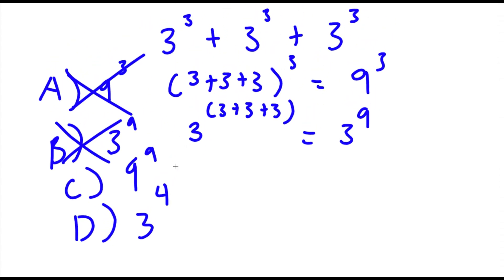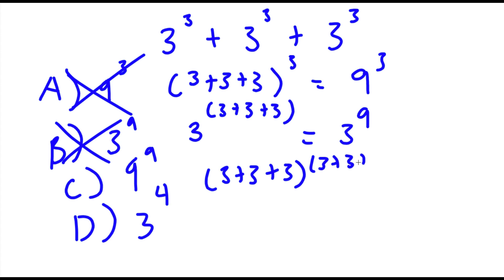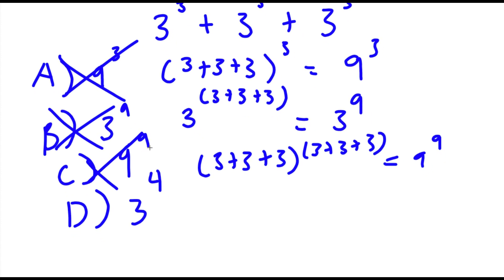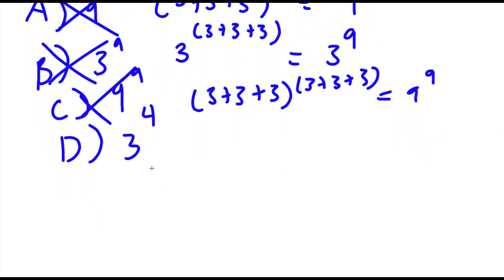For C, they did both — they added the bases and the exponents. So 3 plus 3 plus 3 to the power of 3 plus 3 plus 3, which is equal to 9 to the power of 9. And this is wrong as well. Finally, for D — 3 to the power of 4 — which is actually the right answer. So we have 3 to the power of 3 plus 3 to the power of 3 plus 3 to the power of 3.